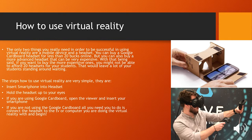The steps on how to use virtual reality are quite simple: insert the smartphone into the headset, and hold the headset up to your eyes. If you are using Google Cardboard, open the viewer and insert your smartphone. If you are not using Google Cardboard, connect the headset to the TV or computer and begin. Thank you for watching my virtual reality presentation.